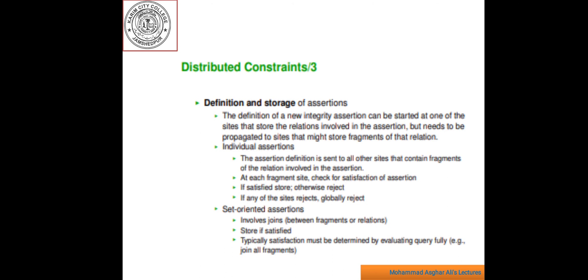The second one is set-oriented assertion. We first study single relation constant by means of examples. Here, it involves join, store if satisfied. Typically, satisfaction must be determined by evaluating query fully. For example, join all fragments. So, these are the different points which are related to semantic integrity controls.